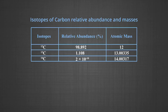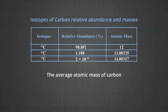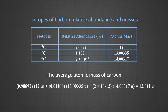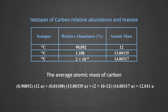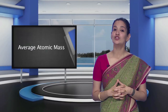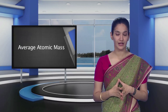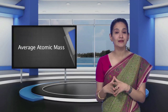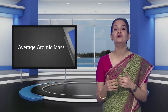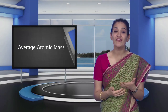From the data, it is clear that the average atomic mass of carbon will be: 0.98892 × 12u + 0.01108 × 13.00335u + 2 × 10⁻¹² × 14.00317u, which equals 12.011u. Similarly, average atomic masses for other elements can be calculated. In the periodic table of elements, the atomic masses mentioned for different elements actually represent their average atomic masses.